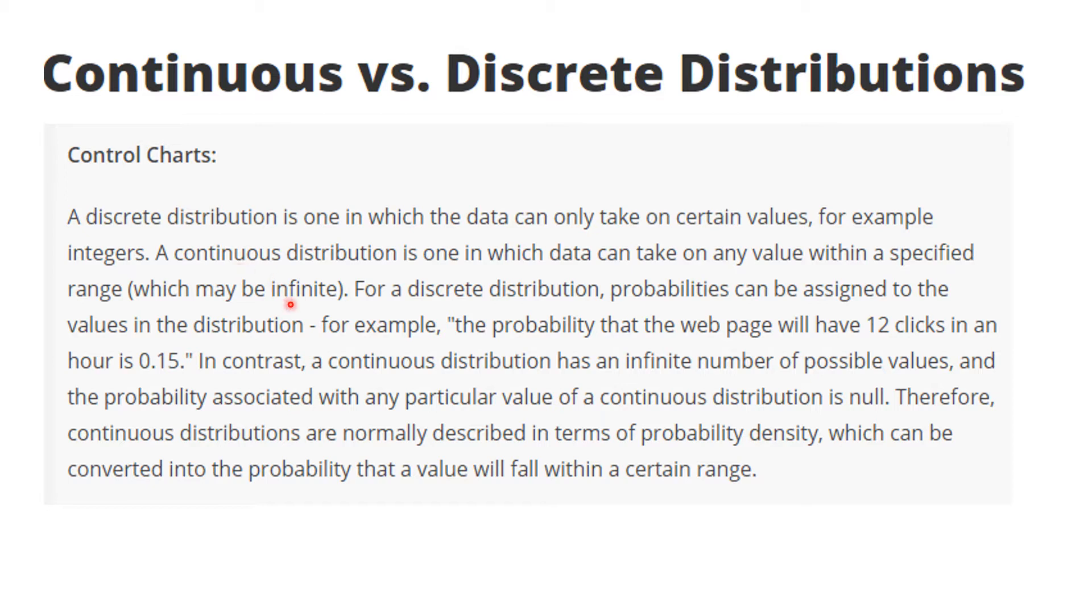So for a discrete distribution probabilities can be assigned to the values in the distribution. For example the probability that the web page will have 12 clicks in an hour might be 0.15. In contrast a continuous distribution has an infinite number of possible values and the probability associated with any particular value of the distribution is null or 0. Therefore continuous distributions are normally described in terms of a probability density function which can be converted into a probability that a value will fall within a certain range. And that was what we did with the normal distributions. But today we're talking about discrete distributions.